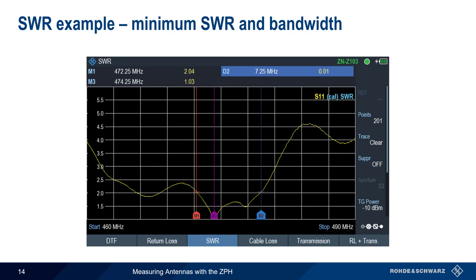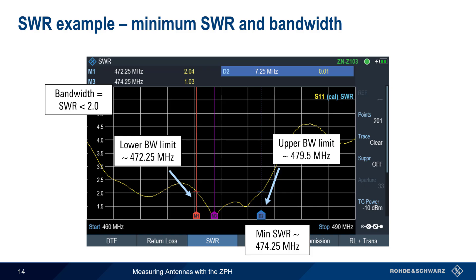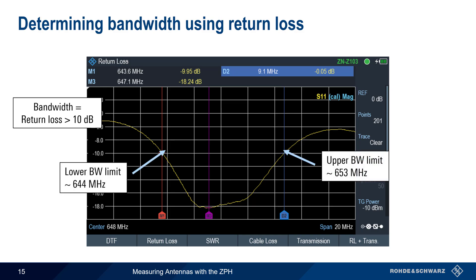Let's start by using markers to find the resonant frequency and bandwidth of this antenna. The antenna can be considered resonant at the frequency with the lowest SWR, which in this case is approximately 474 MHz. We'll define our antenna bandwidth as the range over which SWR is less than 2. Using markers, we can determine the lower bandwidth limit of 472.25 MHz and the upper bandwidth limit of 479.5 MHz, meaning that our antenna has a bandwidth of approximately 7.25 MHz. Note that in this case, the bandwidth is not perfectly centered around the resonant frequency. Antenna bandwidth is also commonly defined in terms of return loss, typically the range over which return loss is greater than 10 dB. Switching the display format to Return Loss and setting lower and upper markers, we get an antenna bandwidth of approximately 9 MHz.